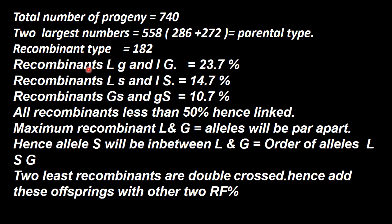The recombinant frequency percentage: for L and G it is 23.7%, for L and S the recombinant frequency is 14.7%, and for G and S (capital G and capital S) it is 10.7%. So we have got three percentages.